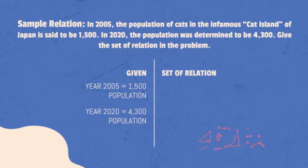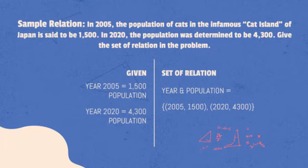The set of relation in this example is the year with its corresponding population with the elements 2005 and 1,500, and 2020 and 4,300.